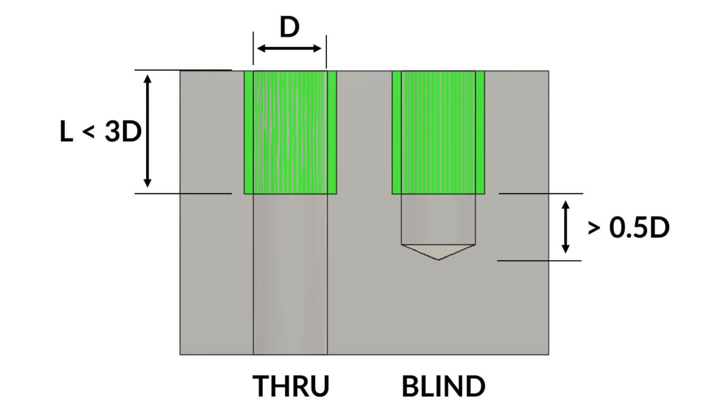For blind holes, always allow the pilot drill to extend past the threads by half the diameter. It is difficult to tap threads all the way to the very bottom of the hole and requires the machinist to change out the tap type to achieve this.